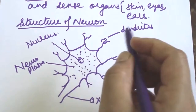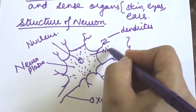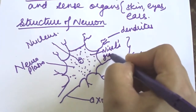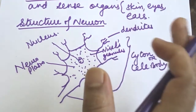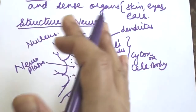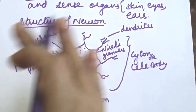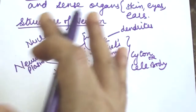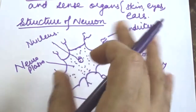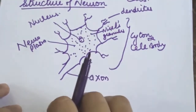These dots I have marked are called Nissl granules. These granules are present in the cytoplasm, giving it a granular appearance — somewhat like the tiny beads found in a face wash scrub.